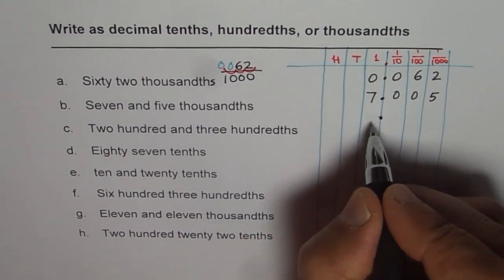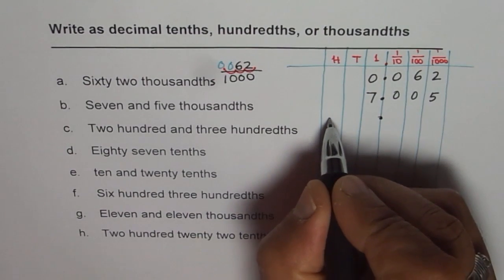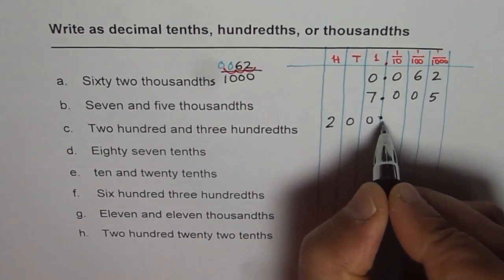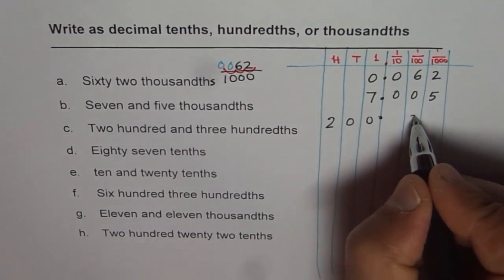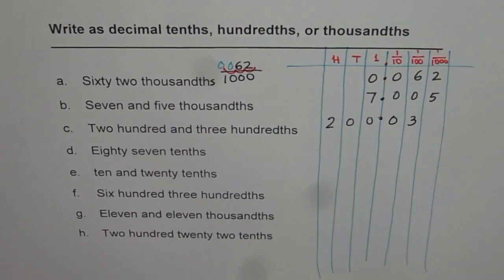Two hundred and three hundredths. So two hundred comes before decimal. So we have two hundred here, right? Two hundred and three hundredths. In hundredths position we have number three. So it is 200.03.